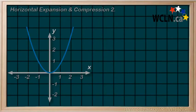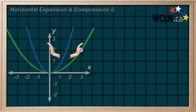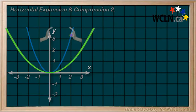We recognize a horizontal expansion as happening when the graph stretches in the horizontal or x direction. A horizontal compression, on the other hand, has the graph being squished in the horizontal direction.